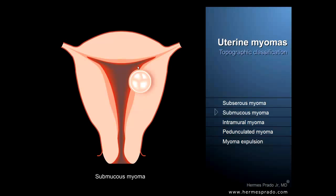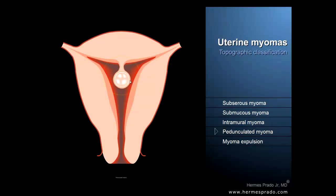And the pedunculated tumor may undergo torsion of the peduncle and cause intense pain and even necrosis, due to the subsequent blockage of its blood supply by the twist.